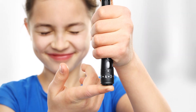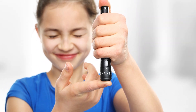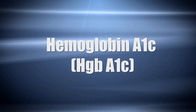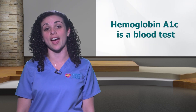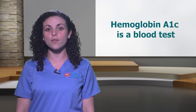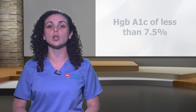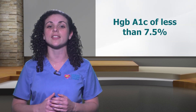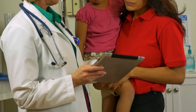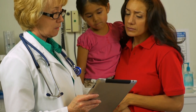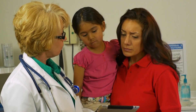Next, let's learn about Hemoglobin A1C. What is it? Hemoglobin A1C is a blood test that tells us the average blood sugar levels over the last three months. According to the American Diabetes Association, all children younger than 18 years should strive to have a Hemoglobin A1C of less than 7.5 percent. Your doctor will order this test periodically to monitor your child's blood sugars over time.